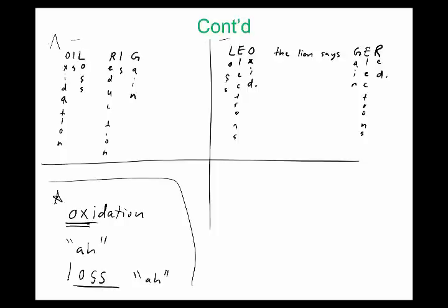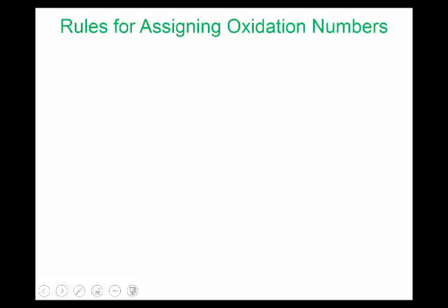Now, how to assign oxidation states — there are some rules. Rule one: oxygen is always minus two. Oxygen is in group 6A and needs two more electrons to reach an octet of eight, so it typically carries a two-minus charge. This is nothing entirely new.